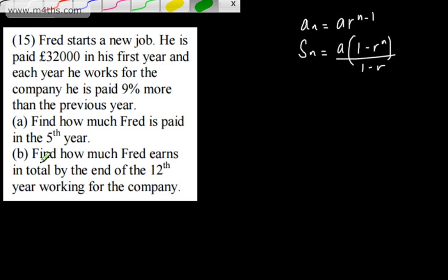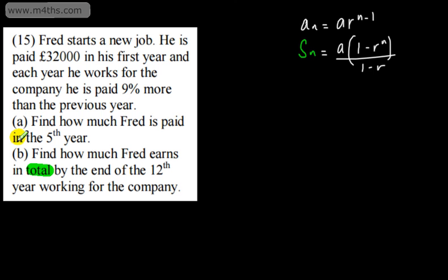If we look at the key words, the key words are things like total. Total suggests that it's going to be a sum. If we're given something along the lines of in the fifth year, this would just suggest a term. On the first one, we're looking for a term. So, we use A sub N equals A multiplied by R to the power of N minus 1, and then the total, when we're adding it up, is the sum. Look for those key words.